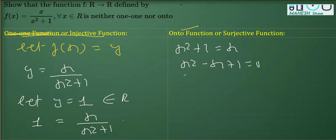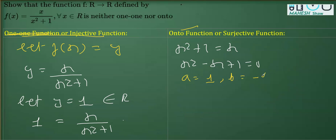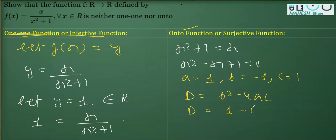Let's find the discriminant D = b² - 4ac. Here a = 1, b = -1, c = 1. So D = (-1)² - 4(1)(1) = 1 - 4 = -3. Since D is less than zero, there are no real roots.